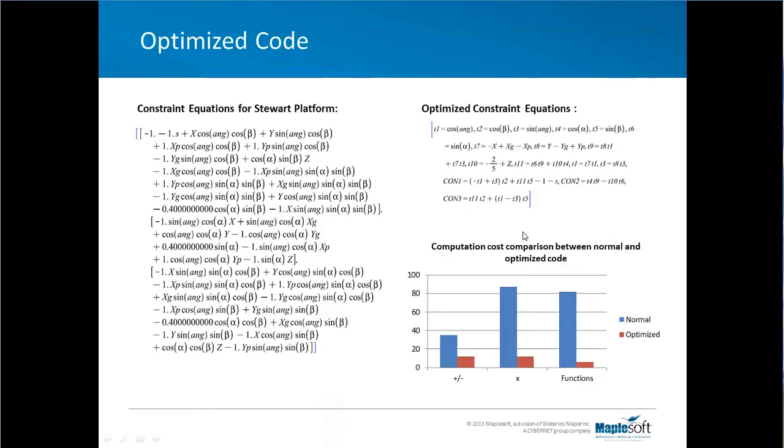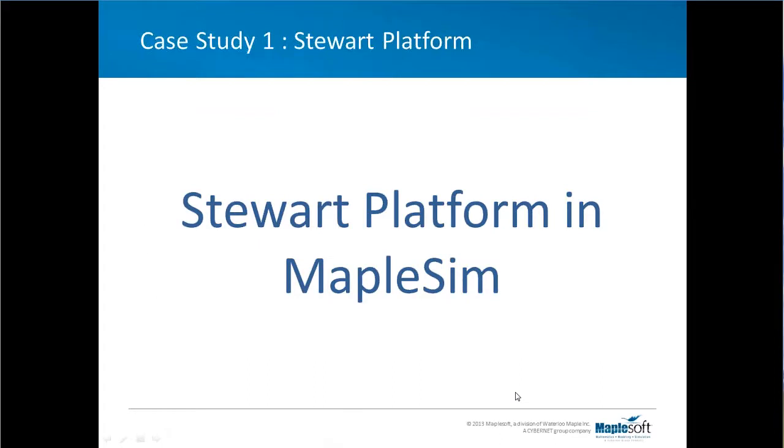Not only is this efficient for managing a computer's memory resources, but it also provides significant benefits in the area of generating efficient simulation code. We take a look at the computation cost between normal and optimized code. On the graph here on the left, or the y-axis, you see the frequency of which each of these operations are performed, and that's a comparison between the normal and our optimized code. Next, I want to show the example of the Stewart platform in MapleSim, and what I want to extend on is how being able to view these equations, and more importantly the structure of these equations in Maple, can lead to further simplifications.